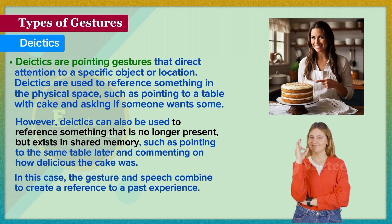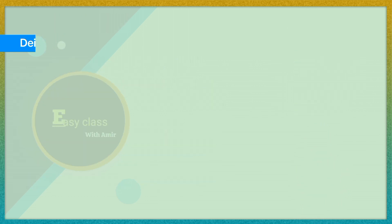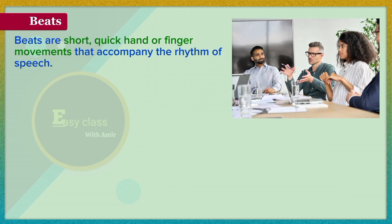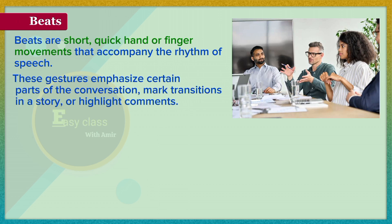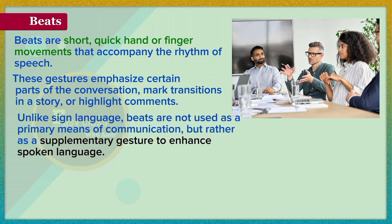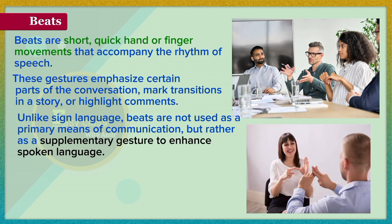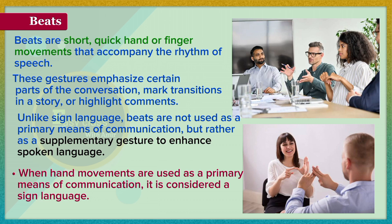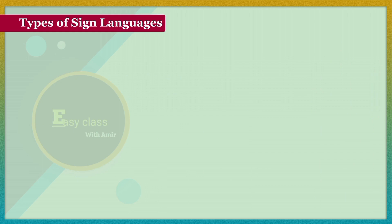Beats are short, quick hand or finger movements that accompany the rhythm of speech. These gestures emphasize certain parts of the conversation, mark transitions in a story, or highlight comments. Unlike sign language, beats are not used as a primary means of communication, but rather as a supplementary gesture to enhance spoken language. When hand movements are used as a primary means of communication, it is considered a sign language.